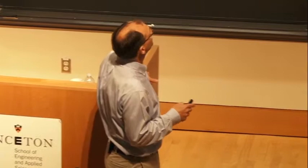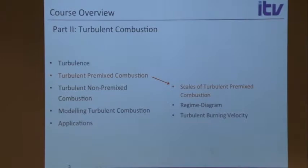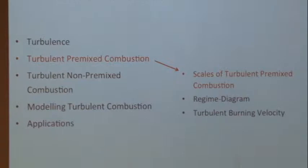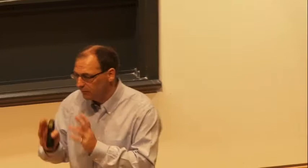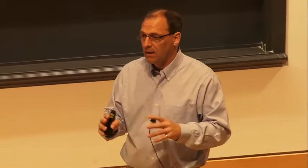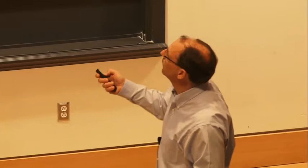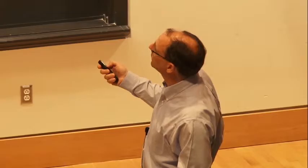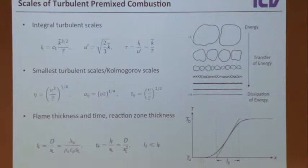We want to talk about the scales of turbulent premixed combustion. We'll review the length scales of laminar flames, review the length scales of turbulence, and then see how these interact. These scales interact with each other — that leads to the notion of regime diagrams, which are very important for turbulent premixed combustion. We'll also talk about the turbulent burning velocity, and look at fundamental work done by Damköhler.